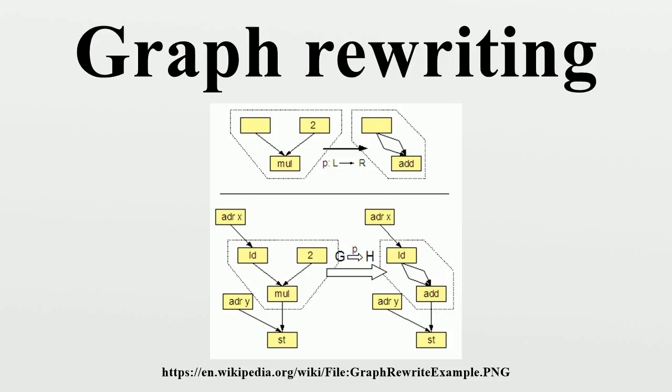Formally, a graph rewriting system usually consists of a set of graph rewrite rules of the form, with being called pattern graph and being called replacement graph. A graph rewrite rule is applied to the host graph by searching for an occurrence of the pattern graph and by replacing the found occurrence by an instance of the replacement graph.